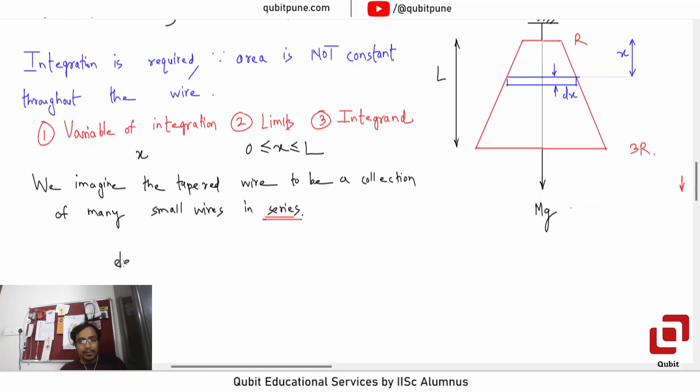Now, can we find the elementary elongation? Let us find it out. Our formula is there: elementary elongation is F L by A Y. Now, please pay attention. Force is same, so this is not going to change, MG. That's same. L is our dx now. Area is something that we need to take care of because radius is changing. And Young's modulus is there.